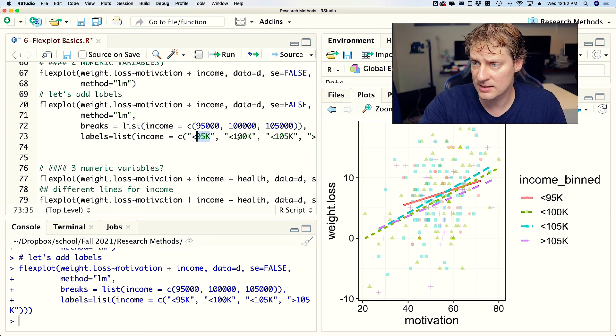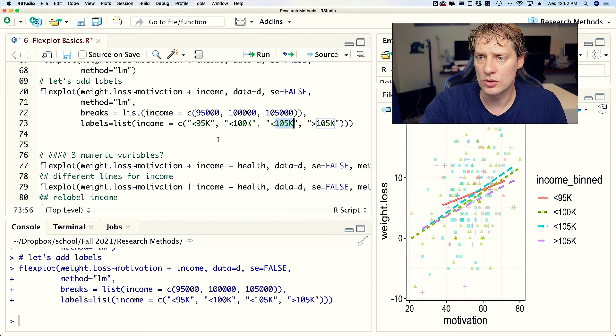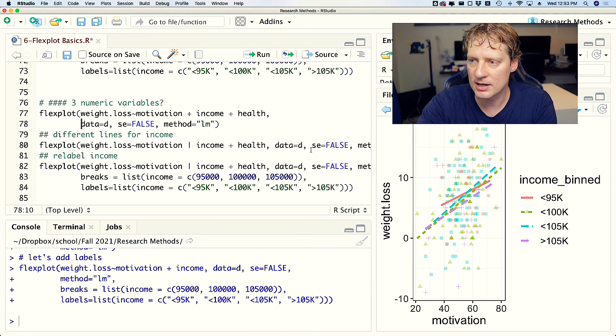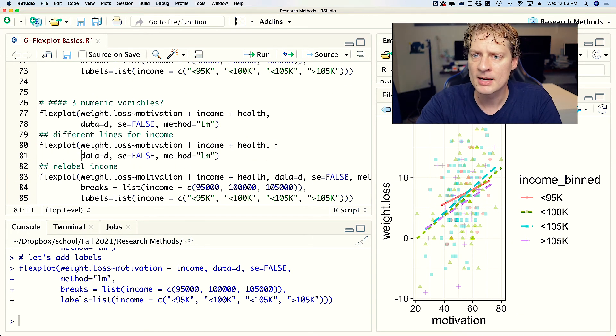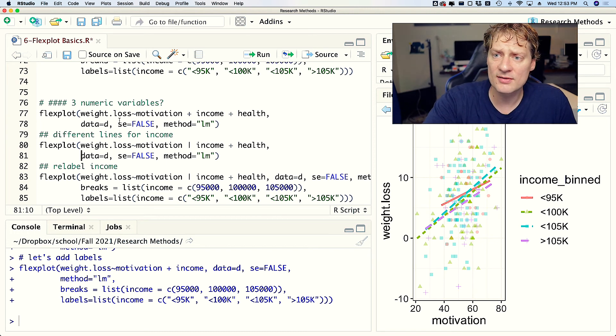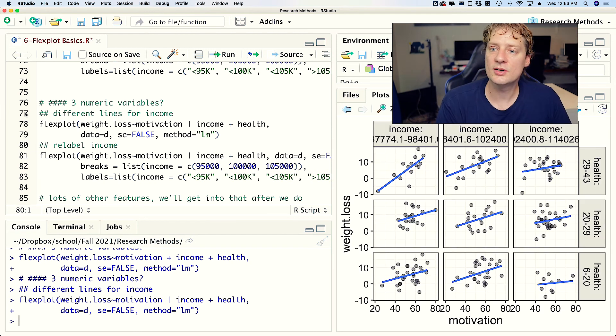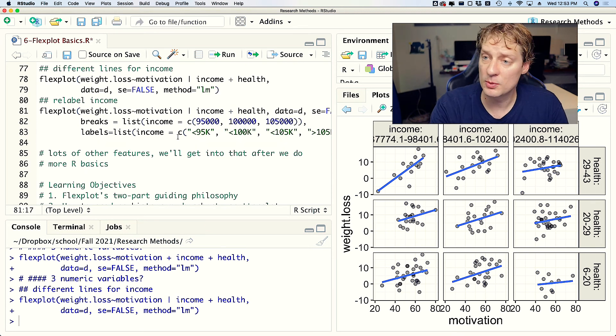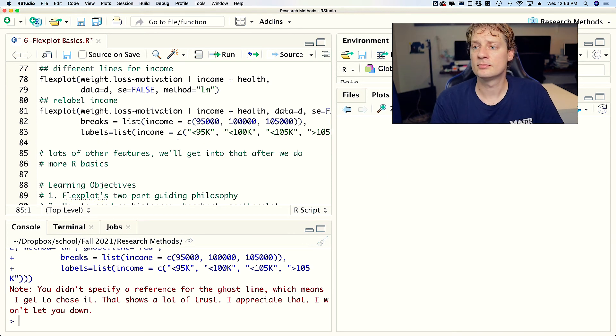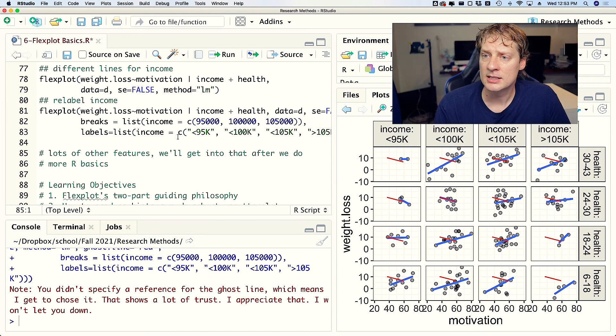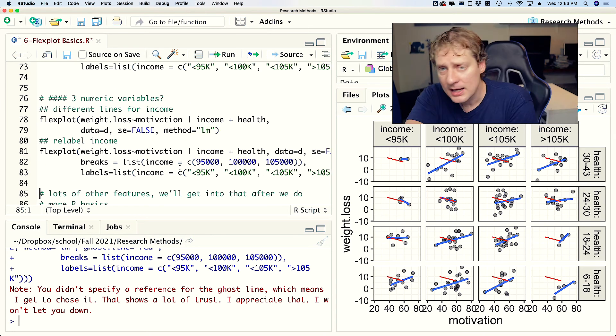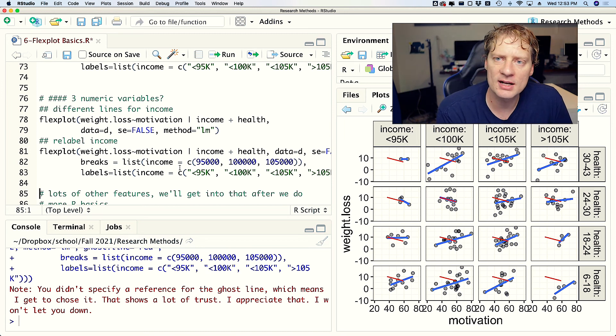What about when you have three numeric variables? Well, it starts to get complicated, but we can do it. So we can run that bit of code, and what that's going to do is it's going to bin both income and health and then do separate panels for that. And then maybe when we want to relabel income, which is the same code as we had before. So anyway, there's lots of functionality, and I'm really scratching the surface of what Flexplot can do.